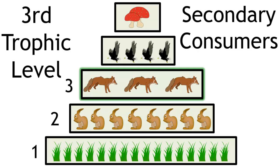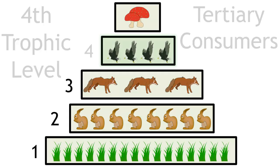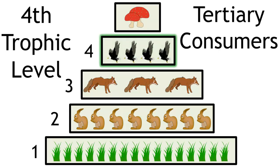The third trophic level is secondary consumers, which in this example is the fox. Followed by the eagle, which is the tertiary consumer, level 4.